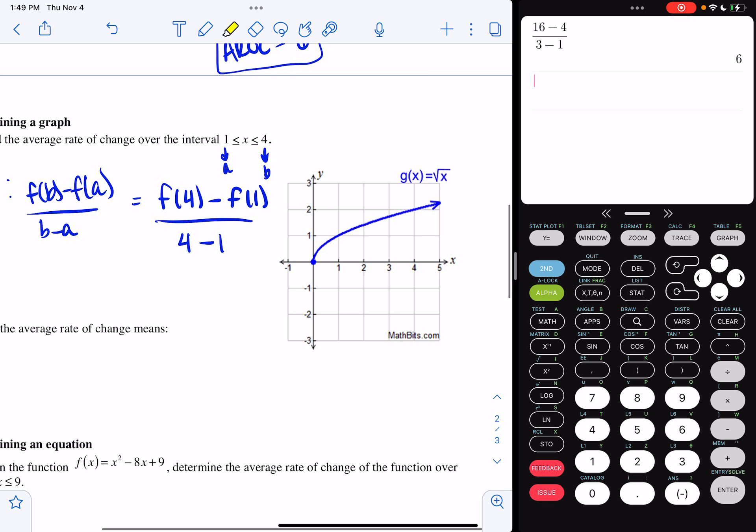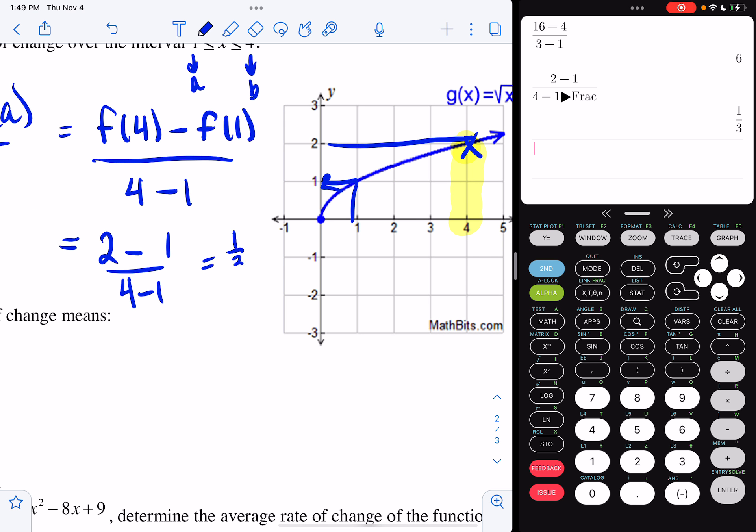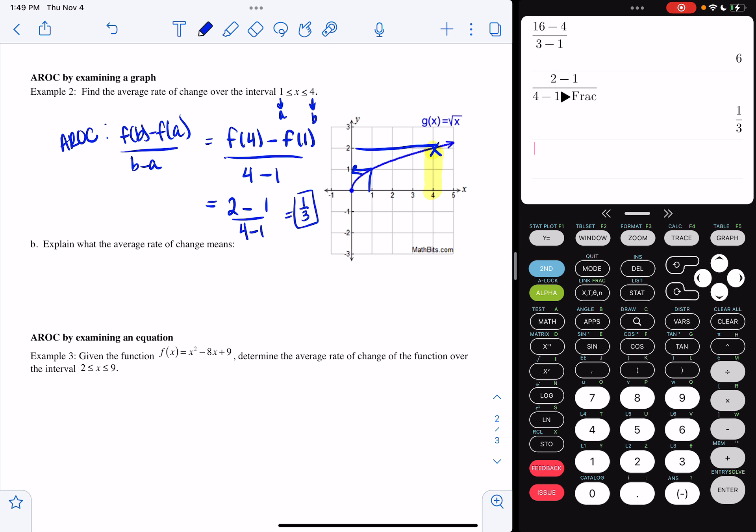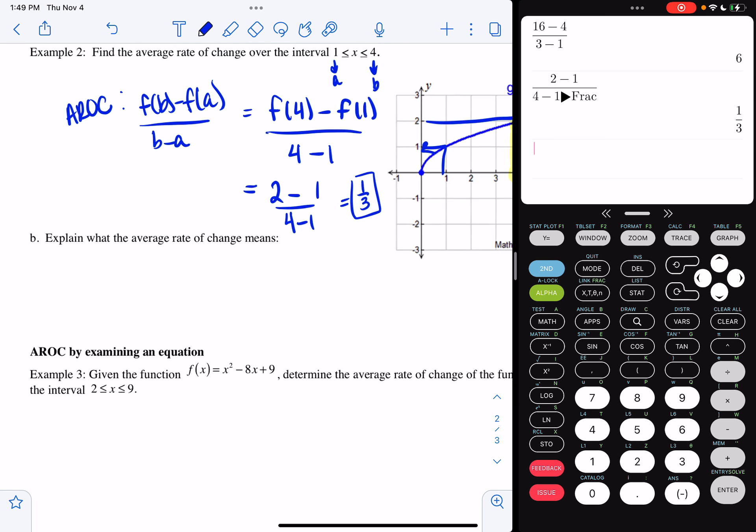So when I plug in 4, I go to my graph and I go up and I hit this point right here. That is a 2. So f of 4 is 2. f of 1 is 1. So I have 2 minus 1 over 4 minus 1. So alpha y equals enter. I get 0.33333, so I'm going to hit math, enter, enter, and I get 1 third. So what that basically means is that for every 1 I rise, my x values are changing by 3.